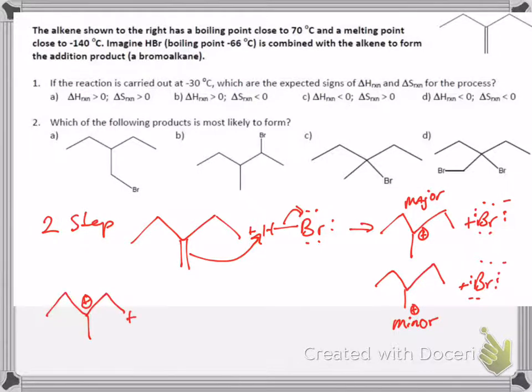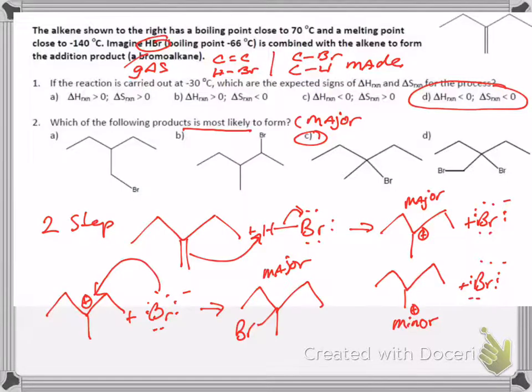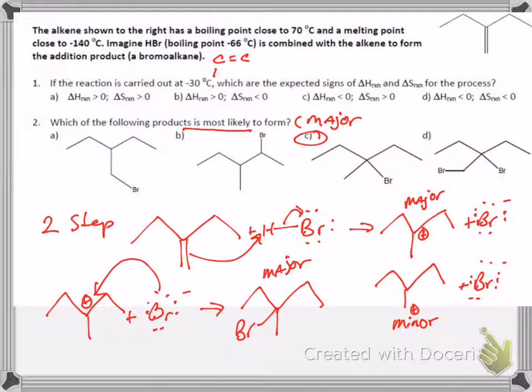In the second step, bromide reacts with the carbocation to form the bond at the carbon site, the major product. So most likely to form the major product, so we would expect C to be formed.